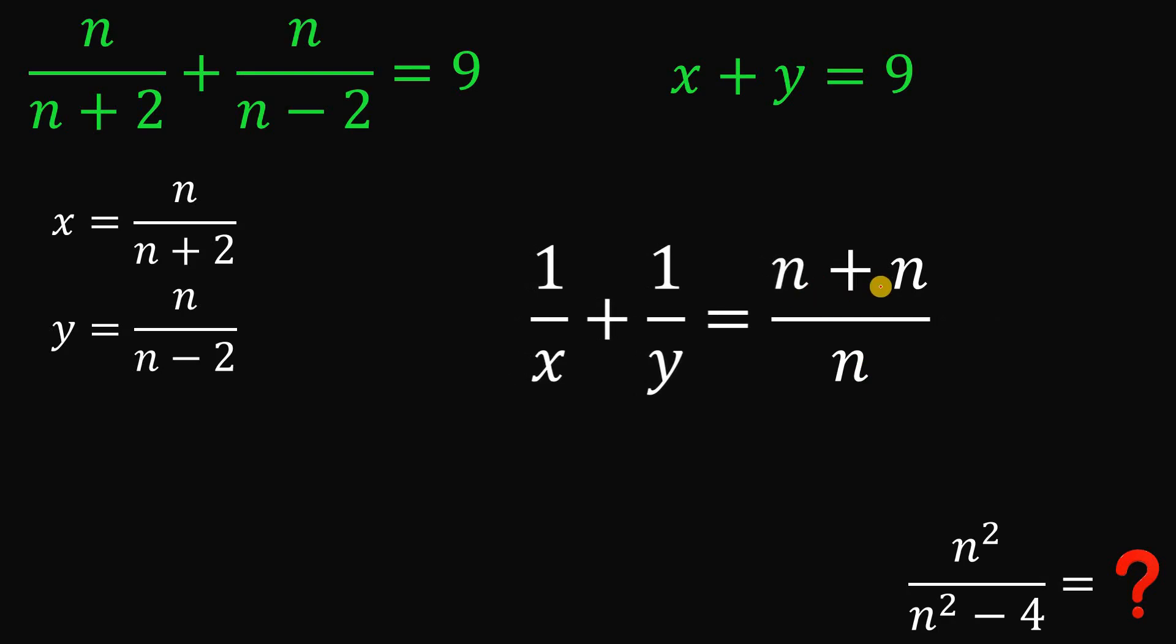This will give us n plus n over n. And n plus n on the numerator, we have 2n. And 2n over n, this will give us 2. So we have 1 over x plus 1 over y equals 2. What is the importance of knowing that the value of 1 over x plus 1 over y equals 2?